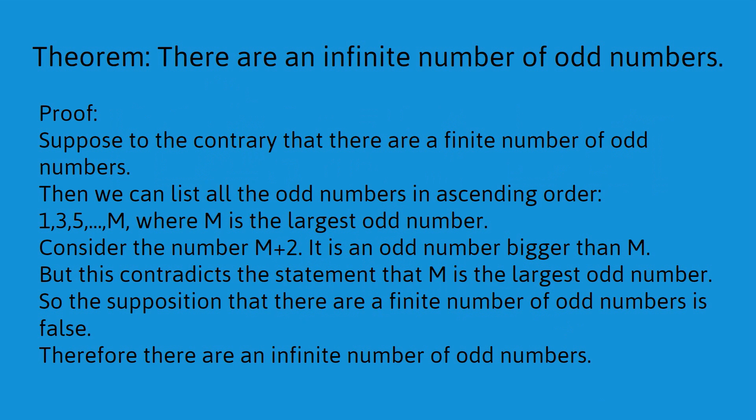So, that follows from the previous logical statement. And now we have the contradiction. This contradicts the statement that m is the largest odd number. We just said that m was the largest odd number. Now, we've shown that there's a bigger number. So, the only thing that can be wrong here is the supposition because everything else is just logical statements, which must be correct. So, the supposition that there are a finite number of odd numbers is false. And therefore, there are an infinite number of odd numbers.